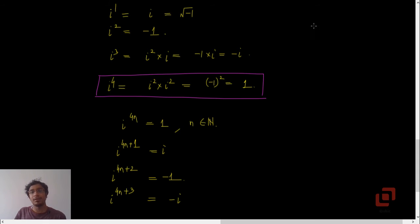Similarly, we can define divisions. So if I want to find the value of 1 upon i raise to 99, I will try to extract the largest power of i which is a multiple of 4. So in this case that is 96. So I can write it as i raise to 96 into i raise to 3. Now we already know that 96 is 24 into 4, but what is i raise to 4? That is 1. So this is 1 upon i cube.